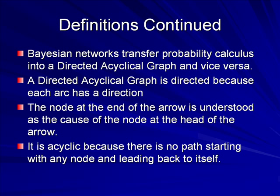Each node represents a mutually exclusive and collectively exhaustive set of possible events. For example, Figure 1 shows a Bayesian network with two nodes. The node armband-legibility has three possible values — no armband, poor, and good — exactly one of which must occur. The other node, armband checked, has two possible values: okay and not okay. A node with two possible values is called a binary node. Binary nodes are common in root cause analysis.